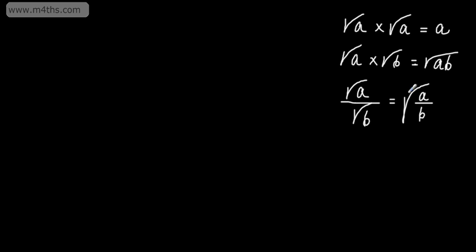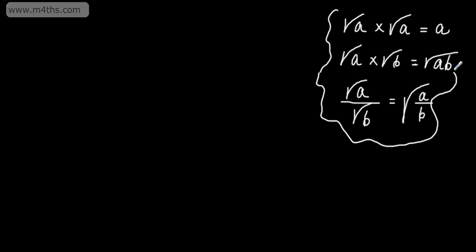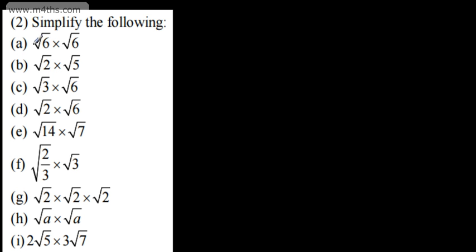When we're simplifying fractions, this property can be used in either direction to help us out. We're going to look at some basic examples and employ these rules for multiplication and division with surds. We're asked to simplify the following: the root of 6 multiplied by the root of 6, and that is just going to give us 6.